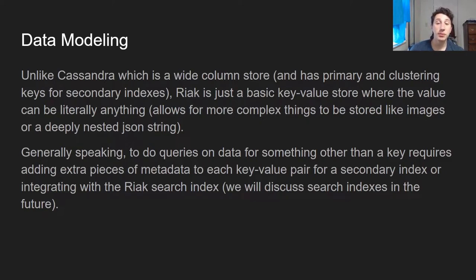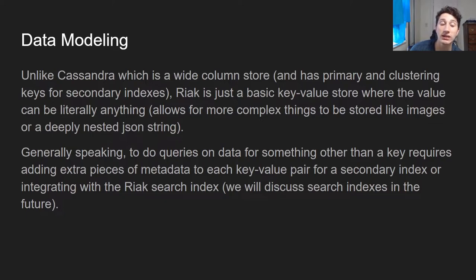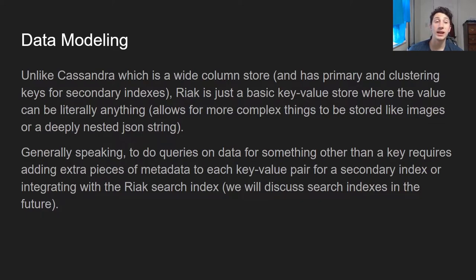In theory, you could store something more complex like a huge JSON document with nested lists or even an image. But at the same time, it means you're probably not going to have great secondary index capabilities or querying based on things in the actual value itself. You can do this using a secondary index in Riak, but generally it seems not very efficient because every single key-value pair will need extra metadata to enable searching by the secondary index. Natively, Riak key-value is mainly useful if you want to be able to search on keys.